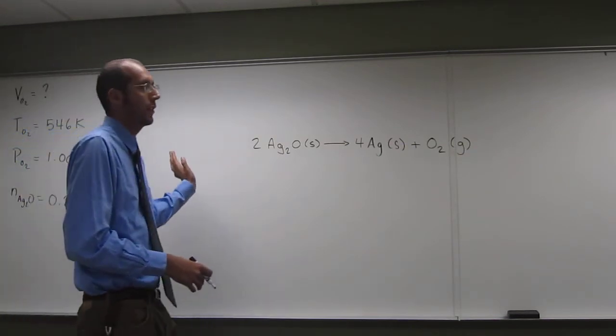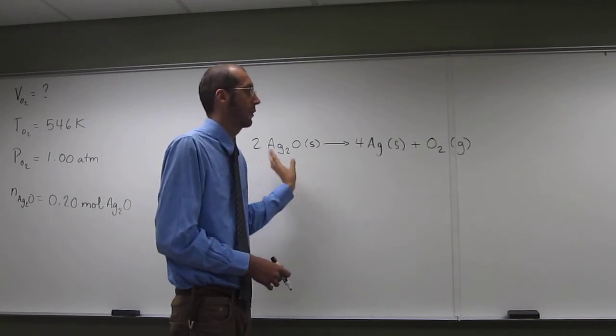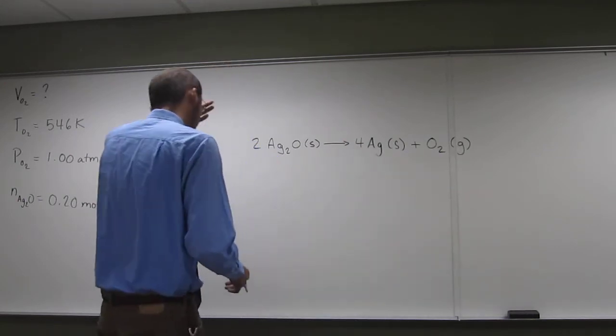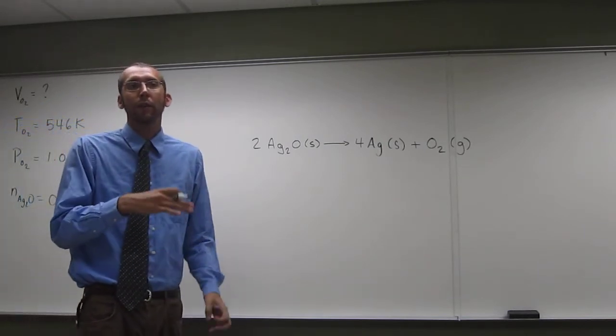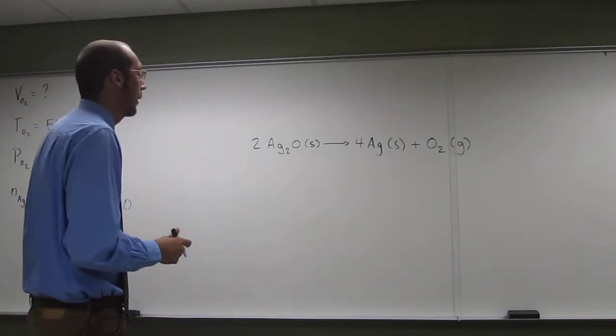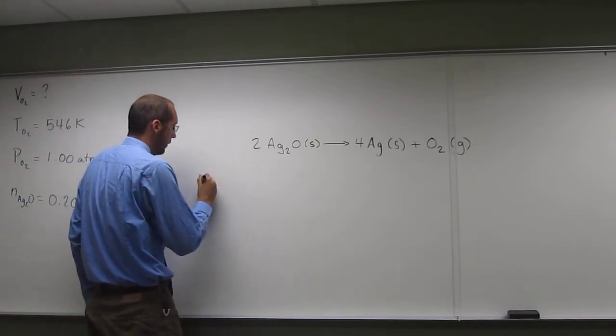And this, of course, is if all of the 0.2 moles of silver 2 oxide went to completion. You'll get more of that in the next section when we talk about percent yields and things like that. So, anyways, let's figure out the number of moles of oxygen.